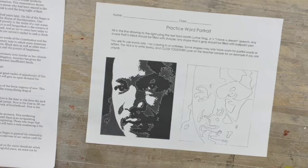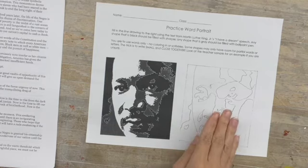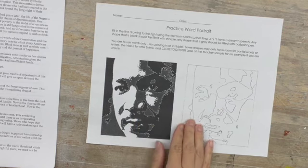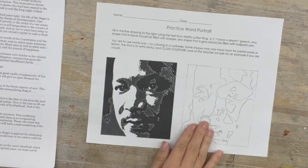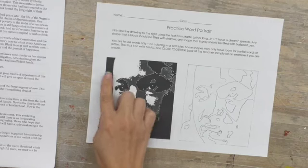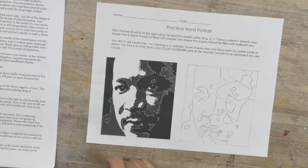In order to practice putting words into your picture before we start on our final project, we're going to do a demonstration on a practice one. So I posterized or flattened a picture of Martin Luther King Jr.